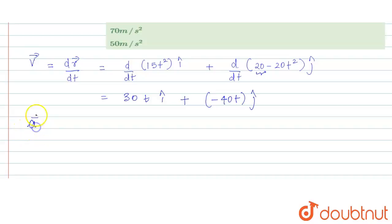Now we have to find the acceleration vector. Acceleration vector is the rate of change of the velocity vector, so we have to differentiate it again.